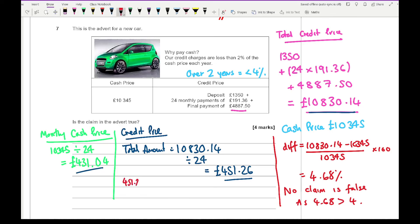If I work out the difference between these two amounts, so £451.26 minus £431.04, all divided by £431.04 multiplied by 100, that comes up with an answer of 4.7%, which is exactly the same. Again the claim is not true as 4.7% is greater than 4%. Any of those two methods, as long as you show that the percentage over two years is greater than 4%, you should be absolutely fine.